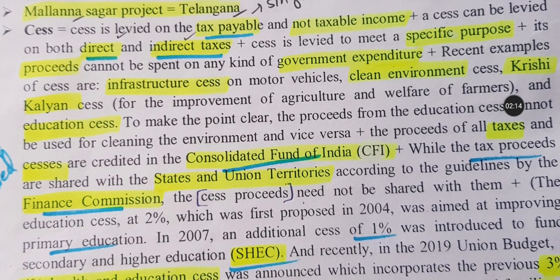Cess can be levied on both direct and indirect tax. Second point: cess is levied on indirect tax. Cess is levied to meet a specific purpose. The central government gives the cess — for example, to education — and the rate can be around 4% of the tax amount you pay on direct income. The cess goes to a specific educational purpose.